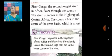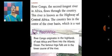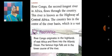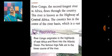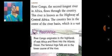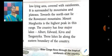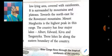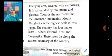Here is a fact: River Congo originates in the highlands of East Africa and flows into the Atlantic Ocean. The famous Inga Falls are in the lower course of the river. The river basin is a vast low-lying area covered with rainforest.